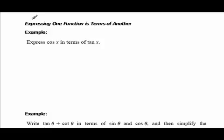The next two problems are meant to get you thinking about how to verify a trig identity, using only the Section 5.1 identities. We're going to try to express cosine x in terms of nothing but tangents. Do we have any identities that pair cosine and tangent together?